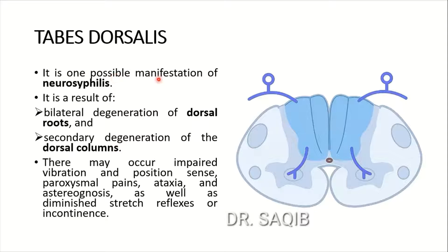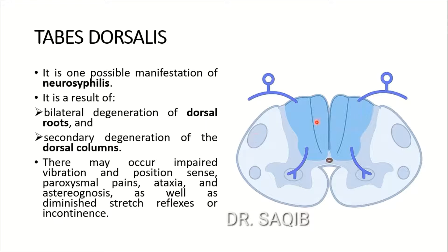It is one possible manifestation of neurosyphilis. It is a result of bilateral degeneration of dorsal roots — you can see the dorsal roots here — and secondary degeneration of the dorsal columns: the medial lemniscus, fasciculus gracilis, and fasciculus cuneatus. There may be impaired vibration and position sense, paroxysmal pains, ataxia, astereognosis, diminished stretch reflexes, and incontinence — all resulting from dorsal column damage.